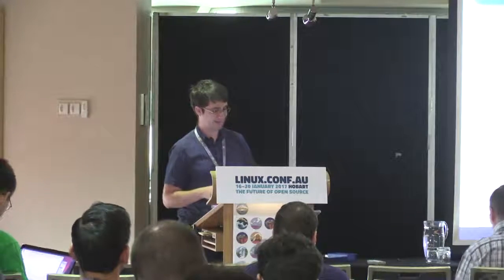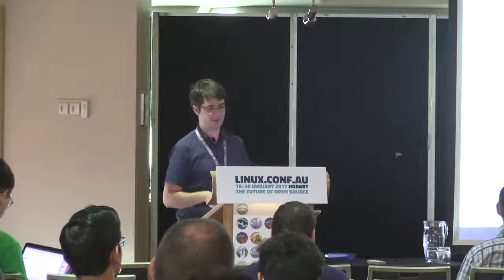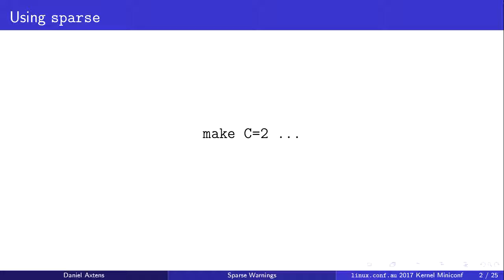It's not a perfect tool, as we'll have a look. It runs as a separate pass to compilation, and it's actually really easy to use. You run make and you add C equals 2, and you get SPARS warnings on all of your files. If you want to get SPARS warnings just on the files that you've changed, make C equals 1.